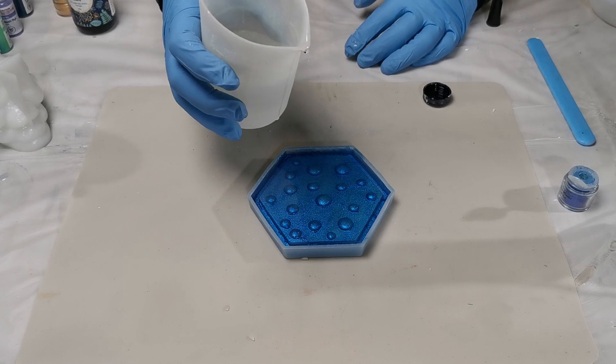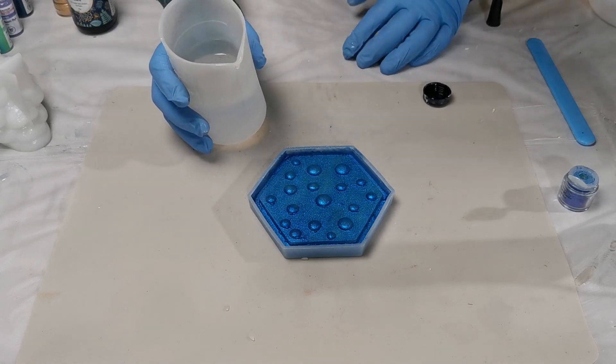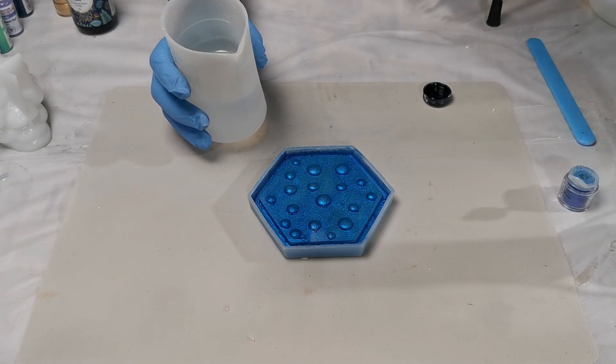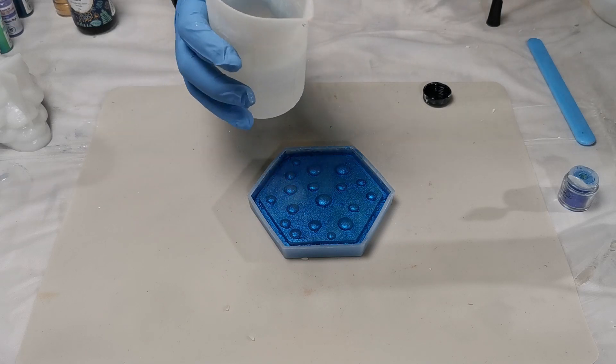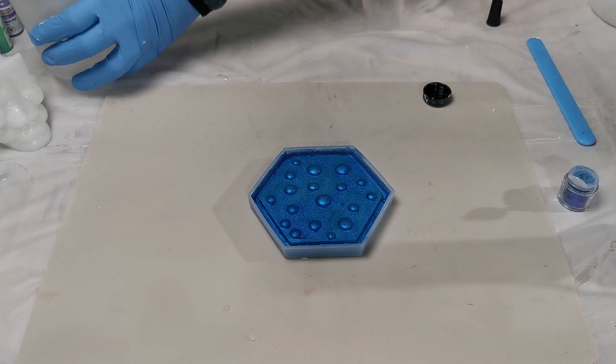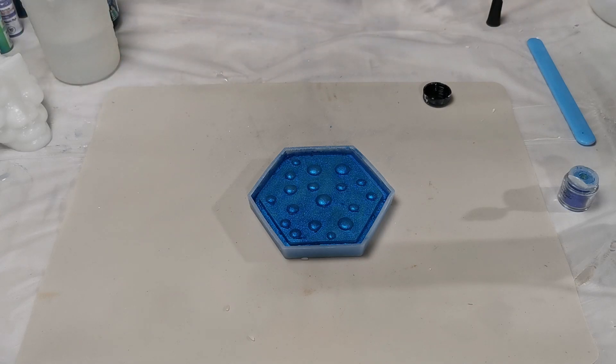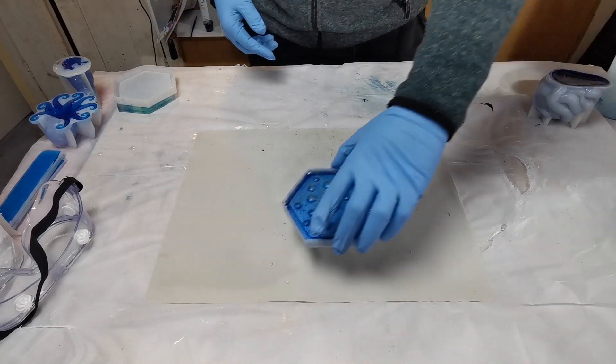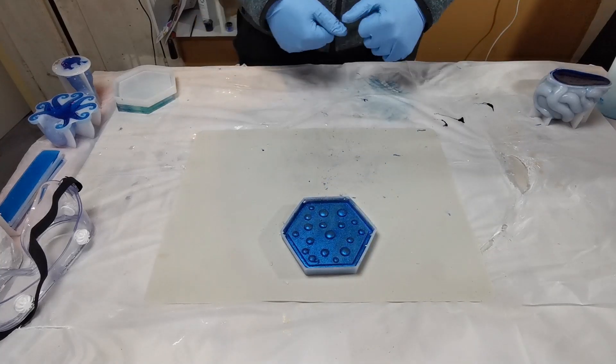Now because the UV resin has cured and we've put that mica powder over it, the resin that we're putting on top is just going to hold that effect—it's not going to blend in. If you just had clear UV resin and you put some clear casting resin across it, then unfortunately you will lose a bit of the effect there.